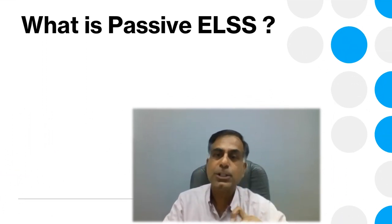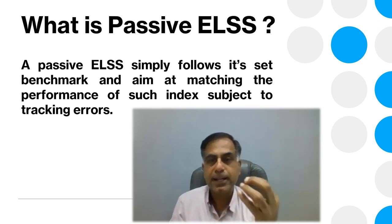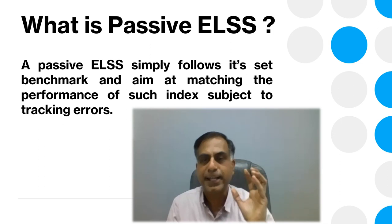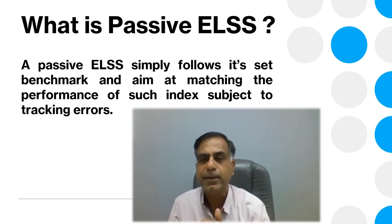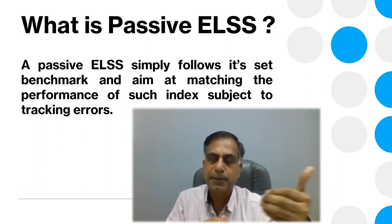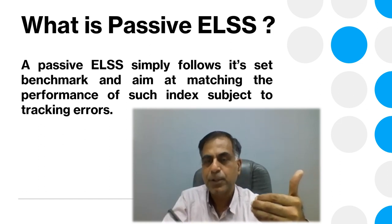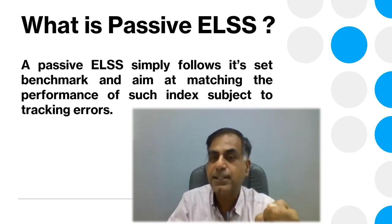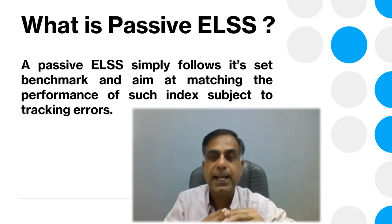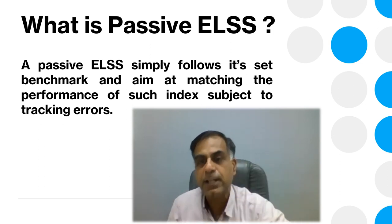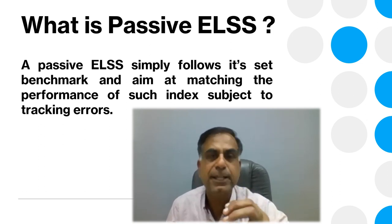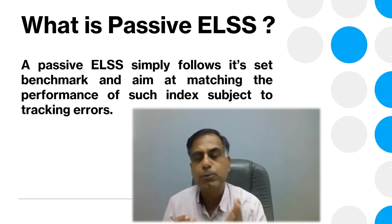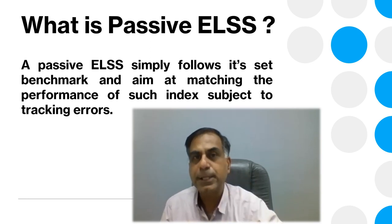To specifically define passive ELSS: a passive ELSS simply follows its set benchmark and aims at matching the performance of that index, subject to tracking error. What is tracking error? In Nifty, there are 50 stocks, and one may be removed while another enters. The fund manager will also sell the exiting share and purchase the incoming share. There may be a small time gap between how changes happen in Nifty and how they happen in the fund. Due to this, there can be a very minor performance gap. Except for that, usually 90–95% of the time, the passive ELSS will match the track of the relevant index.